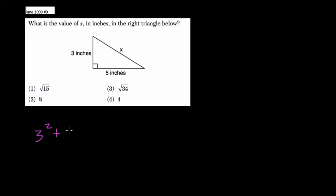3 squared plus 5 squared equals x squared, where x squared is the hypotenuse squared. So 3 squared is 9, plus 25, that's 34, equal to x squared.